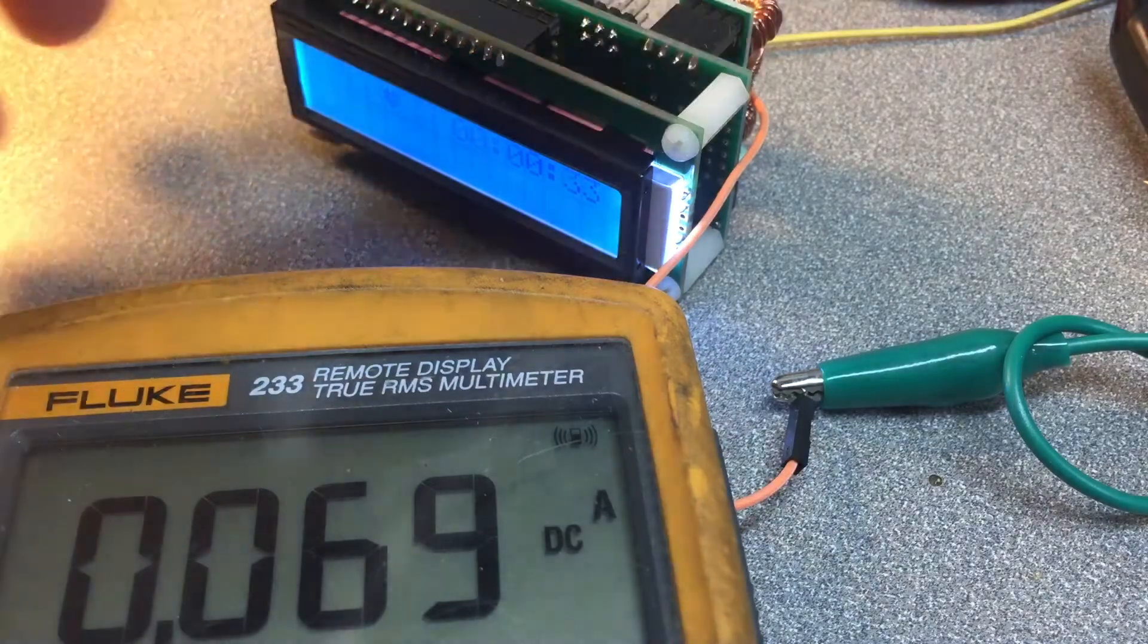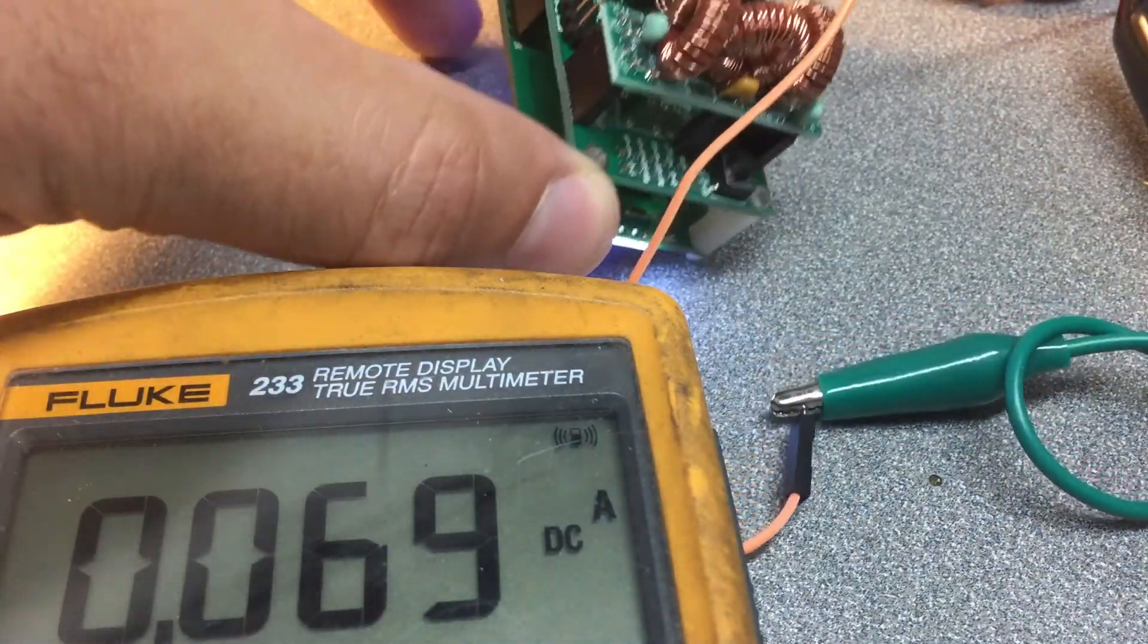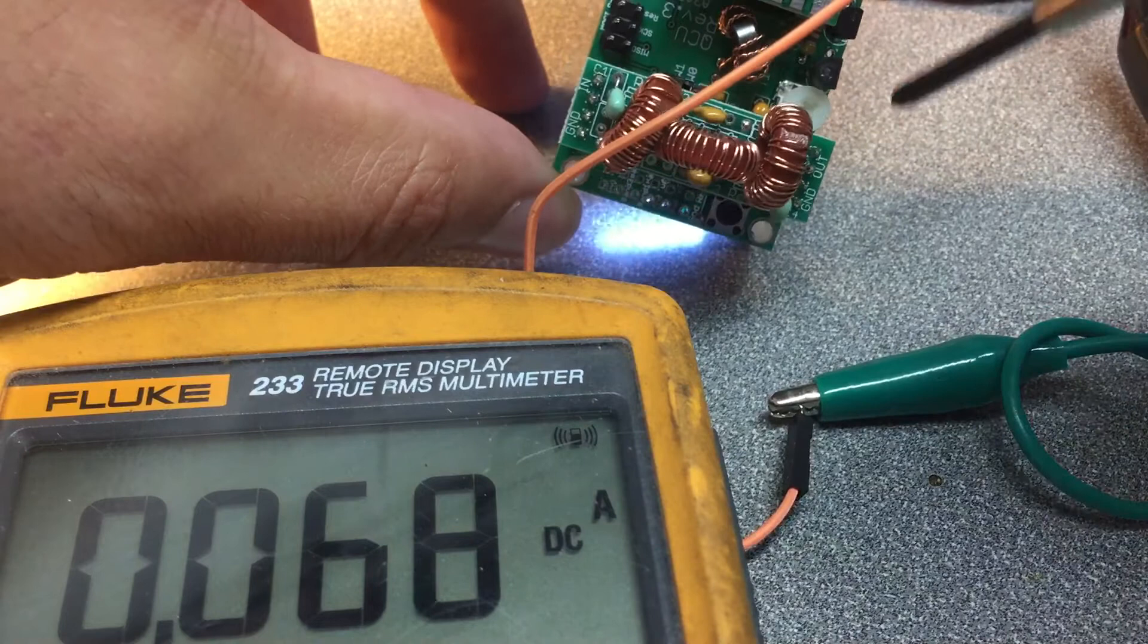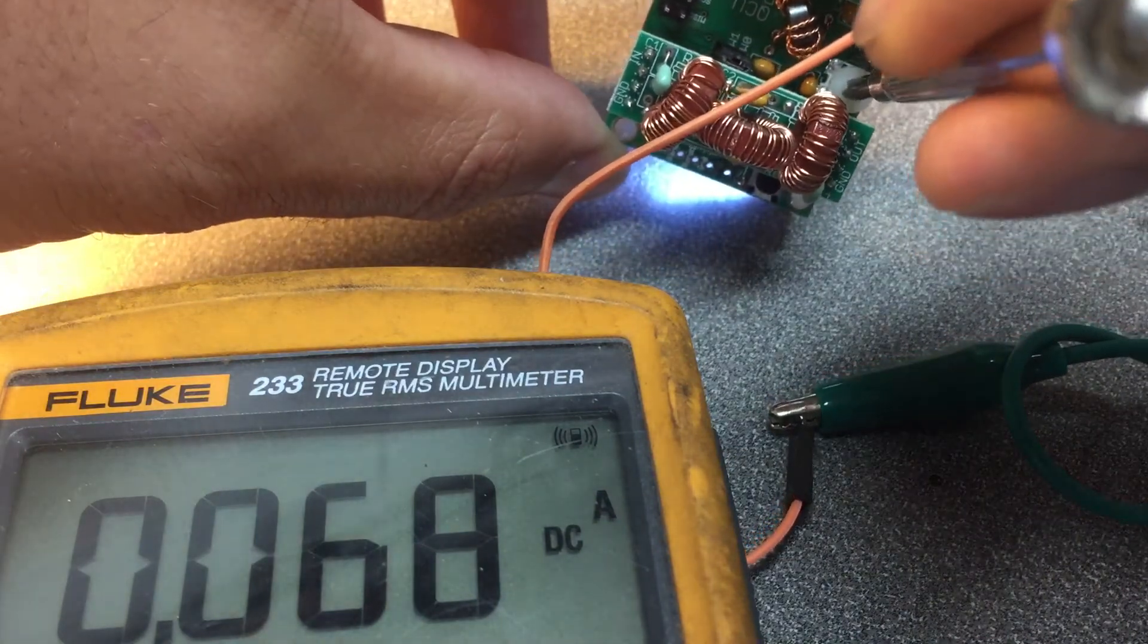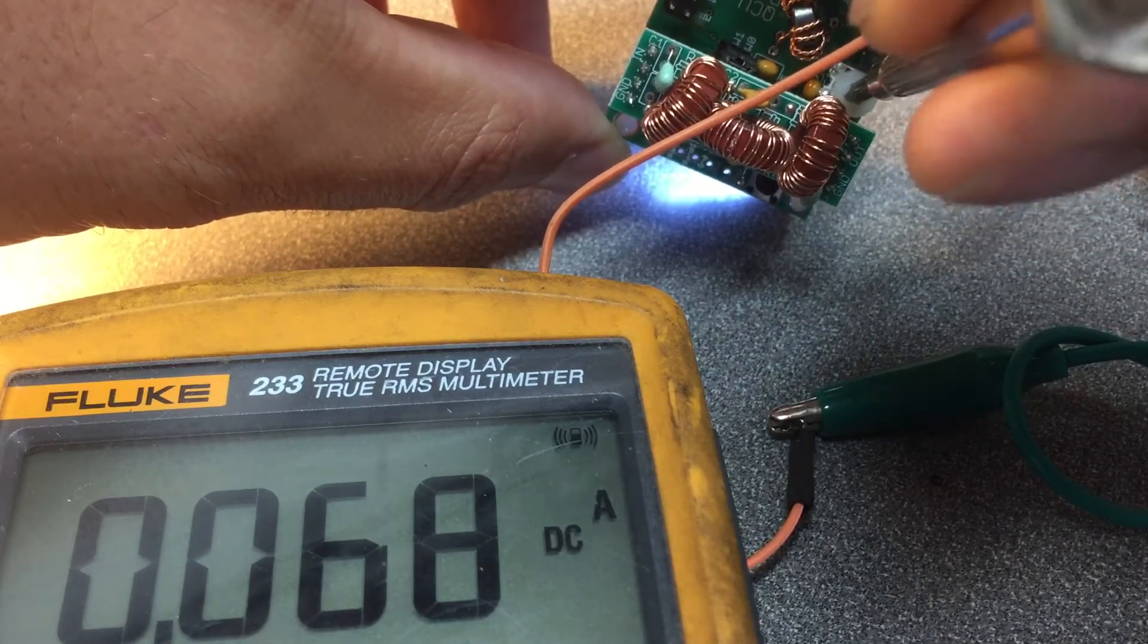You can see the multimeter down here in the lower left. Find the potentiometer. When you power it on, make sure it's fully counterclockwise.